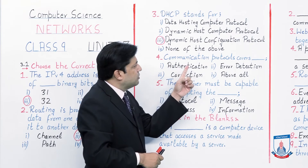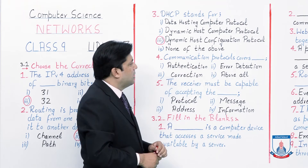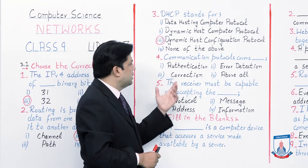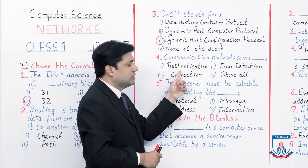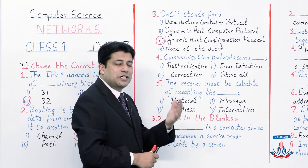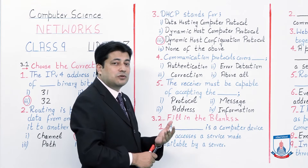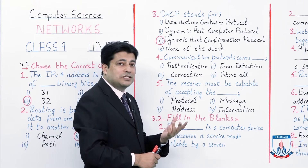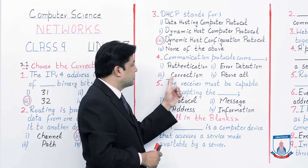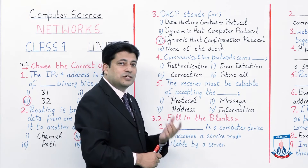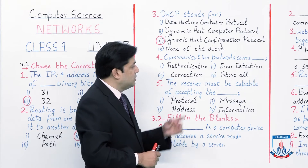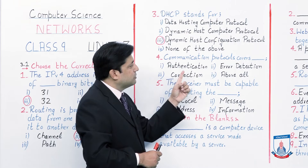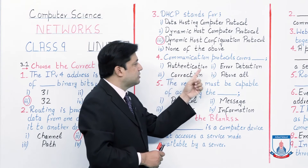Number 4: Communication protocols cover — let's see what communication protocols can do. Option 1 is authentication, which is security-related: whether data sent or received is authenticated or not. Then error detection — whether an error is detected or not. Then option 3 is error correction — whether an error can be corrected after detection.